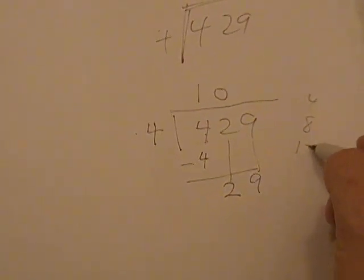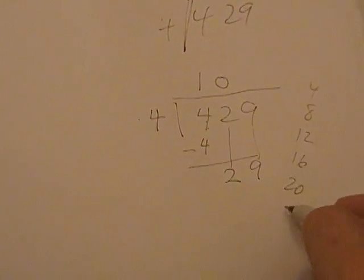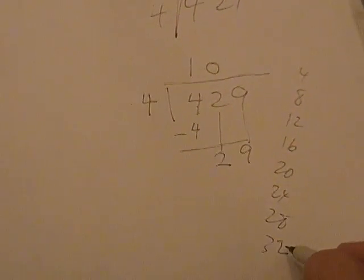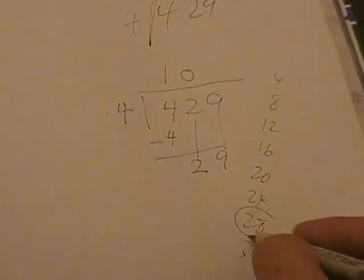Let's go 4, 8, 12, 16, 20, 24, 28, 32. Whoa! Too far, right?